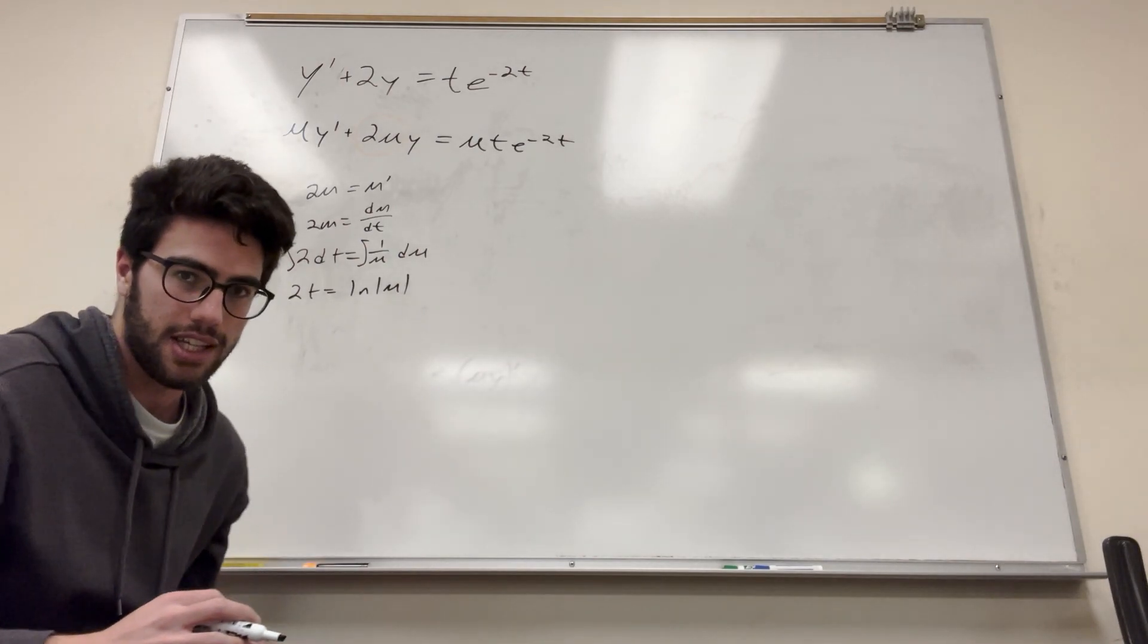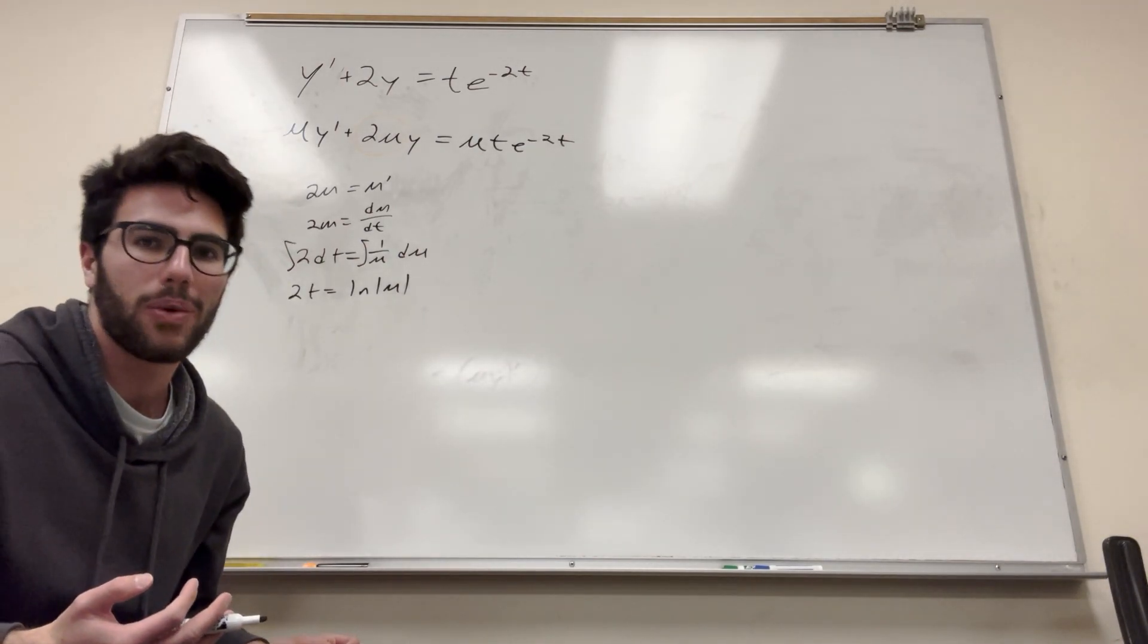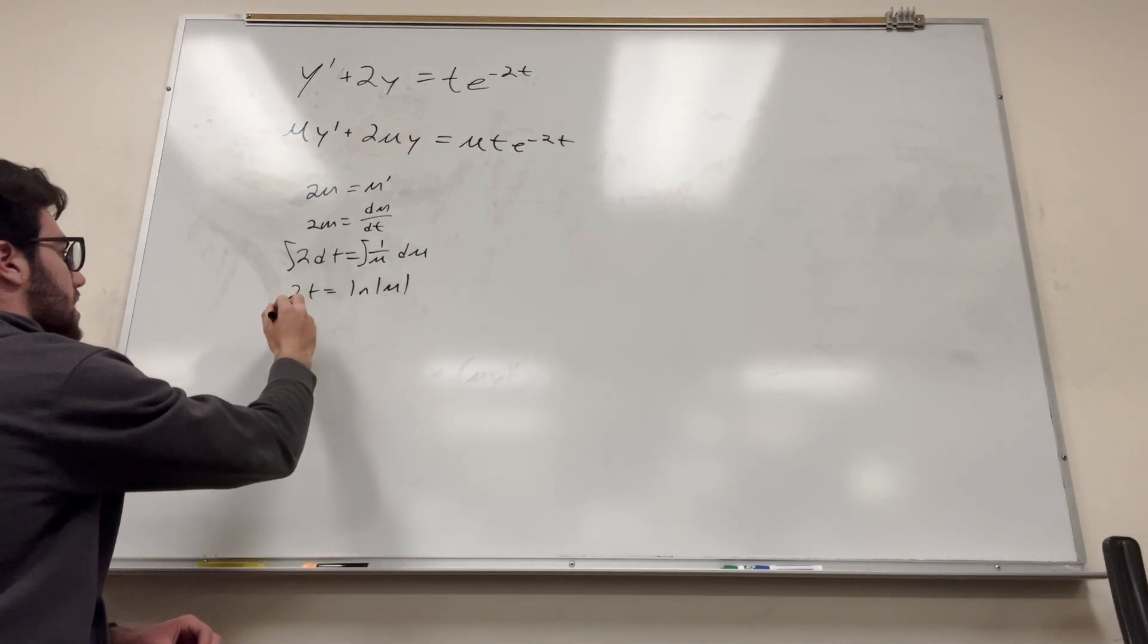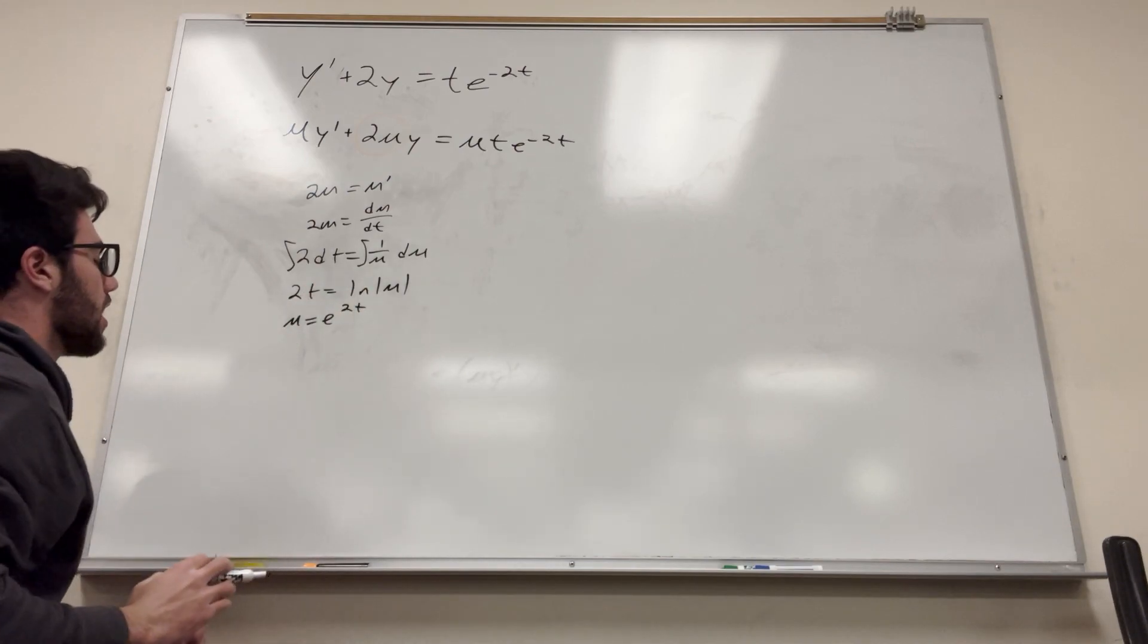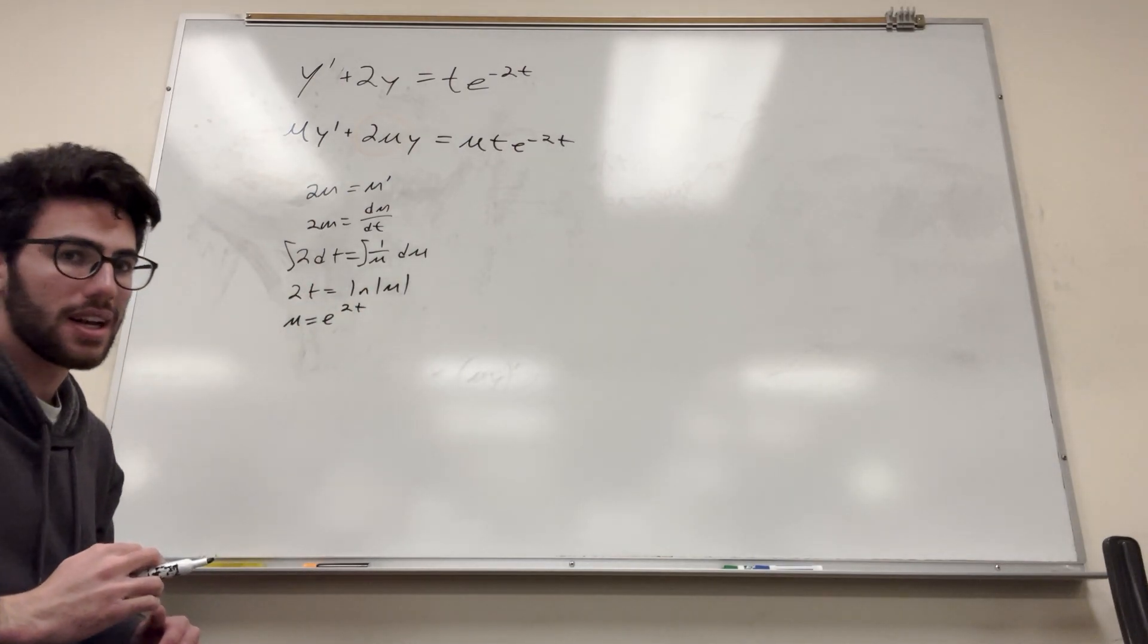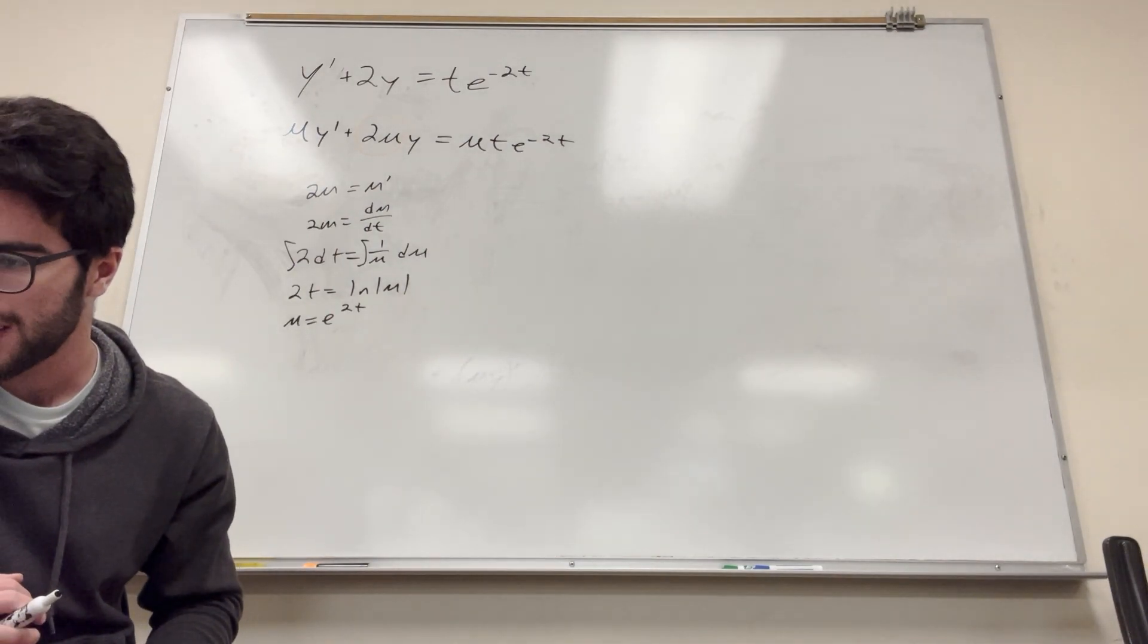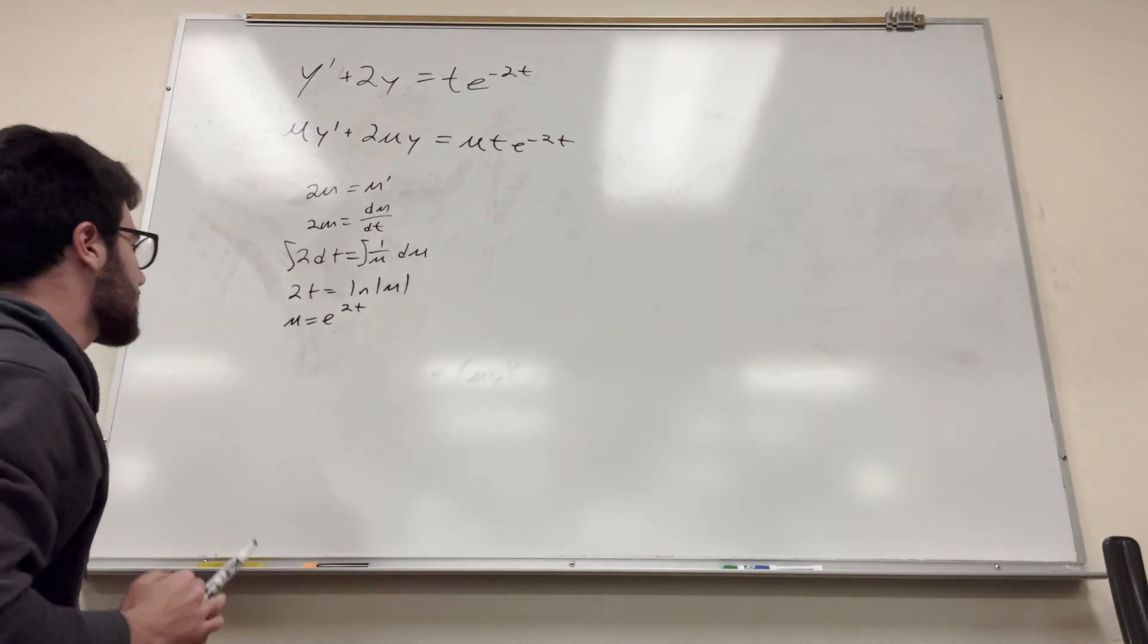Don't worry about the plus c in this. We don't need it, really. Your instructor might want you to put that, but I don't think it's that necessary. So then obviously we're going to exponent both sides, so then you get mu is equal to e to the 2t. It'll technically be plus or minus, but does it matter? Probably not. So mu is equal to e to the 2t.